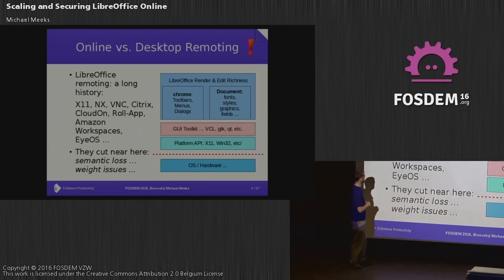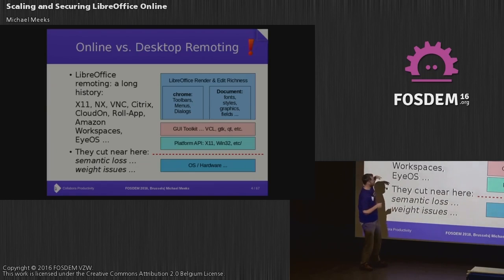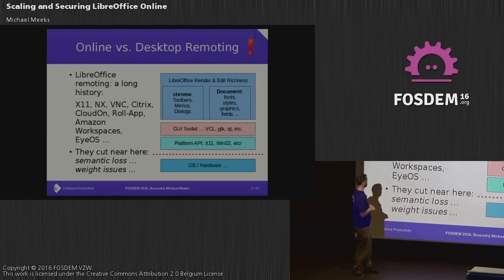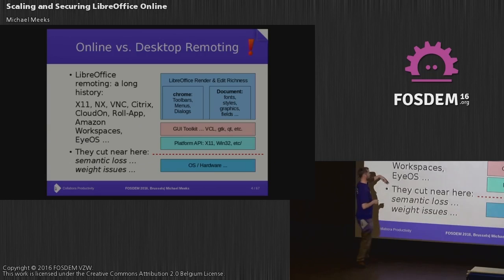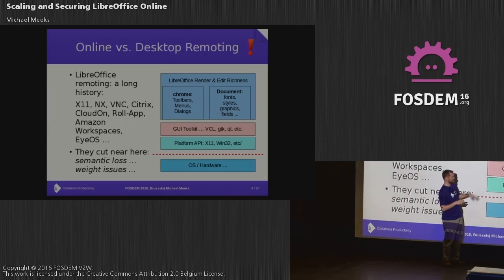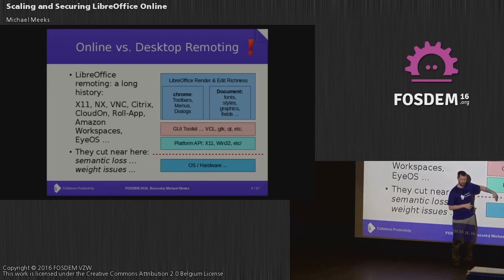X11 is older than I am, almost certainly, and showing it. NX is doing a great job. VNC — Oracle and Olivetti Research made it. Citrix. CloudOn was a particular fan of ours — they were a customer of Collabora, and they did a great load of work in LibreOffice. They would actually record the screen on an Amazon VM, convert it to H.264 video, and play it on your tablet — bringing Microsoft Office to your tablet. iOS, Amazon Workspaces — lots of people doing this.